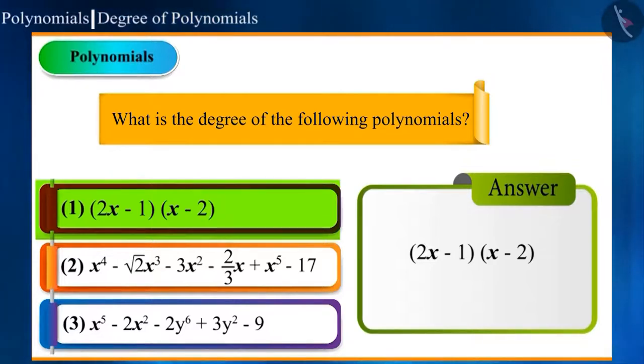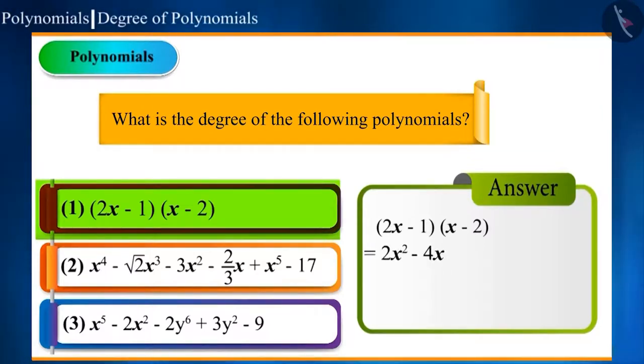On solving 2x minus 1 into x minus 2, we get 2x square minus 4x minus x plus 2, which in turn is equal to 2x square minus 5x plus 2. Now, we can say that this is a quadratic polynomial.